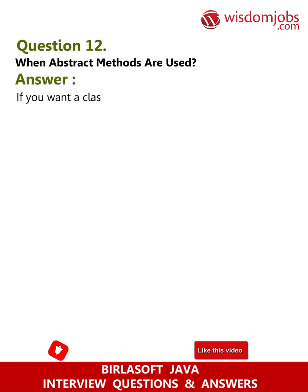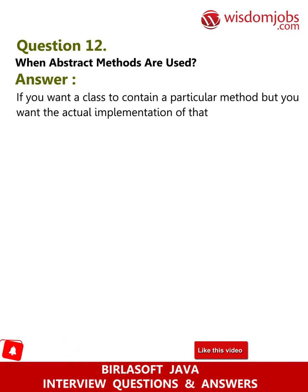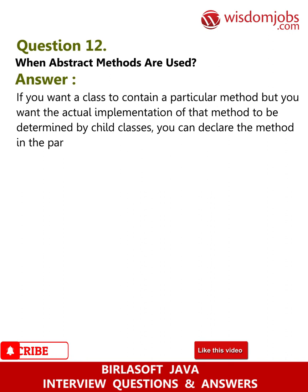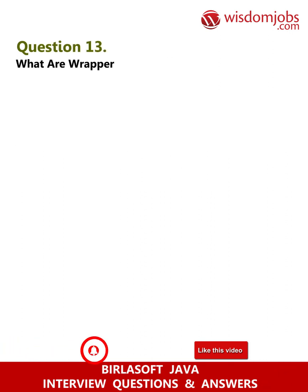Question 12: When are abstract methods used? Answer: If you want a class to contain a particular method but you want the actual implementation of that method to be determined by child classes, you can declare the method in the parent class as abstract.